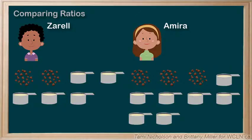You start by writing out the ratio. You can write the ratio as a fraction. For Zarell write two over five. For Amira write three over seven.